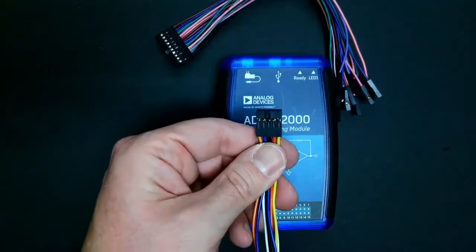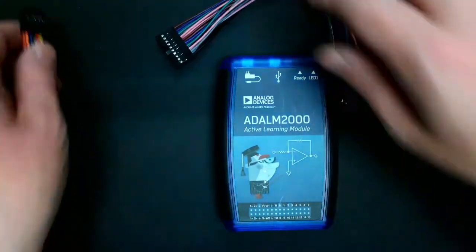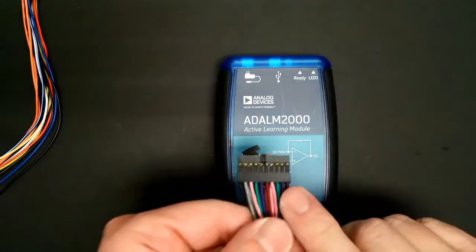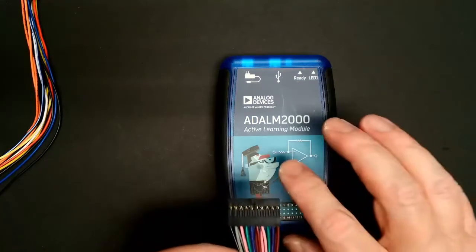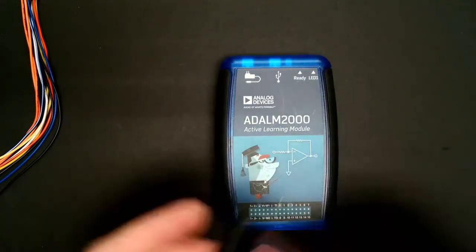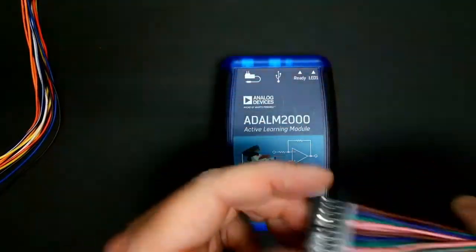There's a smaller connector that's mainly used for the analog functionality of the ADALM2000, and a wider one that exploits the digital functions of the M2K. For this part of the experiment, I'm not doing anything digital, so I'm going to leave it off.